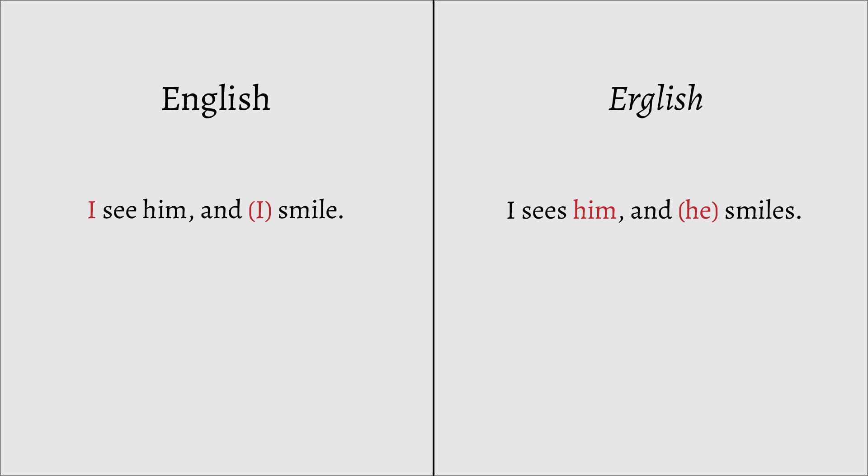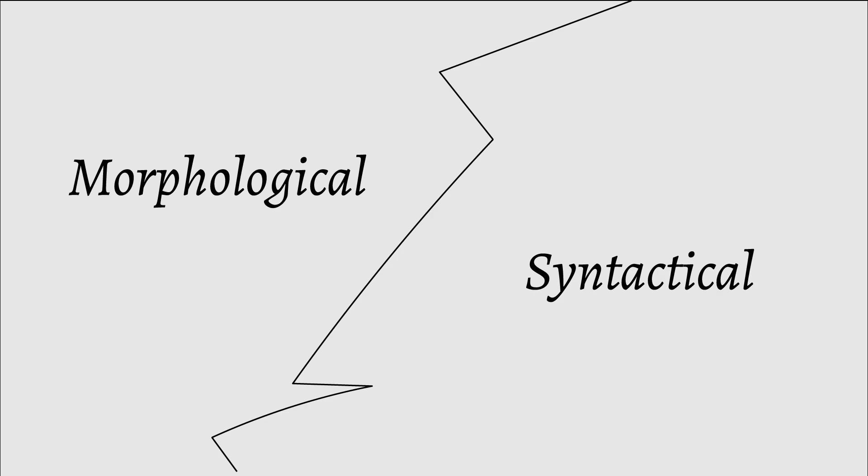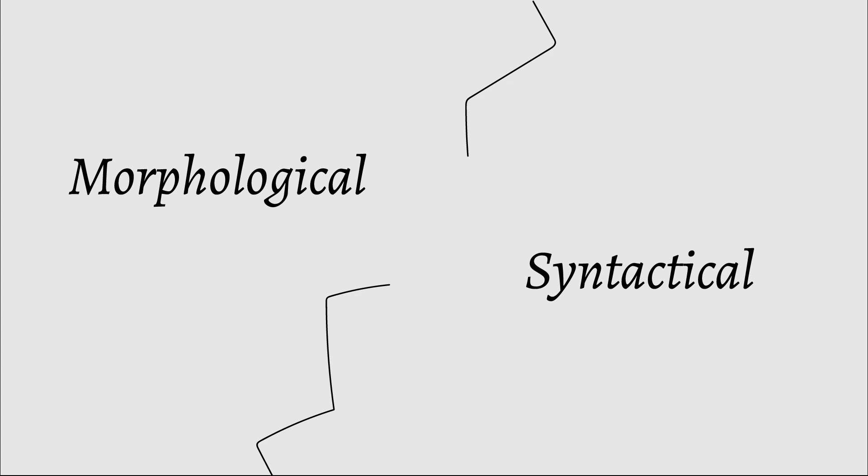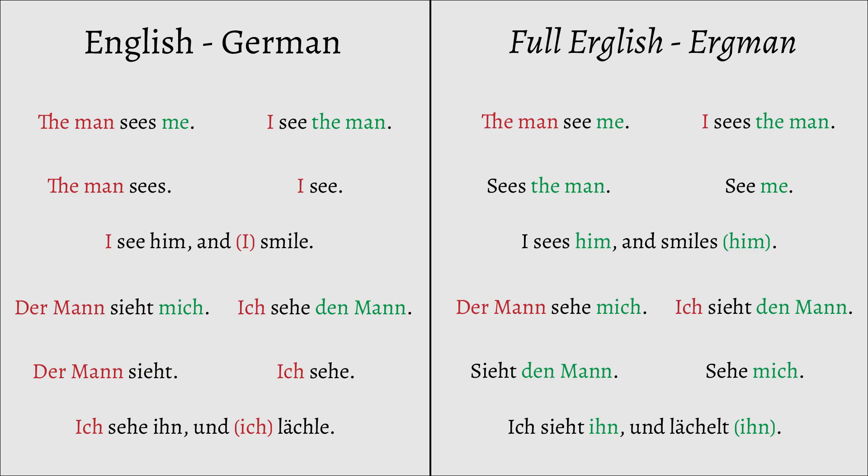Now this might seem very confusing, and is a bit beyond the scope of this basic video. So if you want to further explore this concept of coordination in ergative languages, I recommend checking out the link I post below. Now I've only shown morphological and syntactic ergativity separately, but it is possible to have both morphological and syntactic ergativity. This is how Erglish and Ergman would look if so. However, this type of ergativity is exceedingly rare, with the only known example being Basque, and even that is highly contested among linguists.